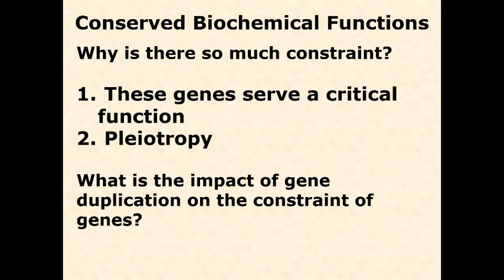Both reasons explain why we see so much constraint over hundreds of millions of years. The Pax-6/eyeless example — the gene that develops the eye in mice and fruit flies — is a bit of an extreme case. Not all homologues can be swapped in and out like that, but there are still remarkable levels of conservation.